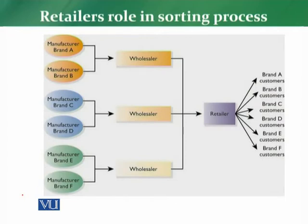Let me explain with this diagram. For example, there is manufacturer brand A and manufacturer brand B. Manufacturer A sells its product to wholesaler X, and that wholesaler sells to the retailer, who sells to the end consumer. Similarly, manufacturer B also contacts wholesaler X, so that wholesaler now has products from two manufacturers and sells them to the retailer, who sells to consumers who may prefer brand A or brand B.